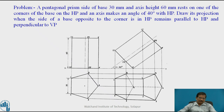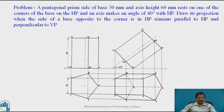We will solve a simple problem. First problem: pentagonal prism, side of base 30 mm, axis 60 mm, rests on one of its corners of the base on HP and axis makes an angle of 40 degrees with HP. Draw its projections when the side of base opposite to the corner remains parallel to HP and perpendicular to VP.